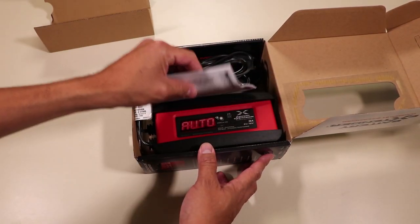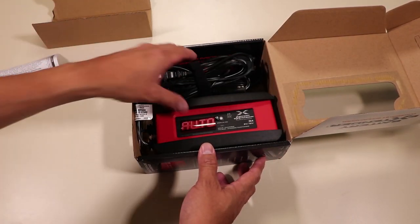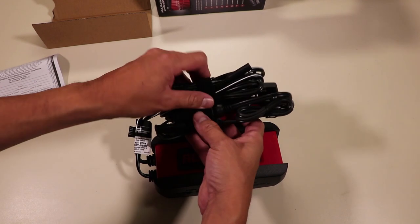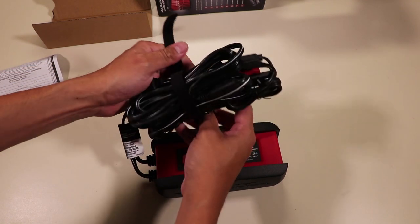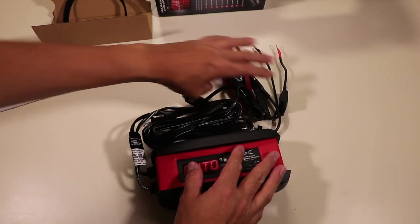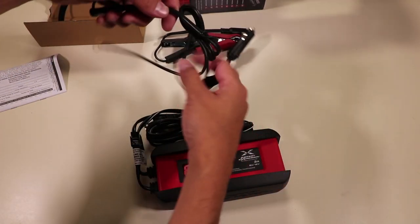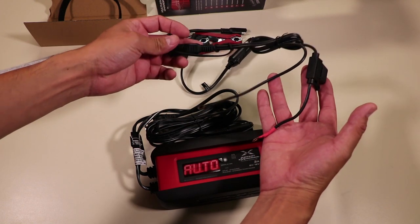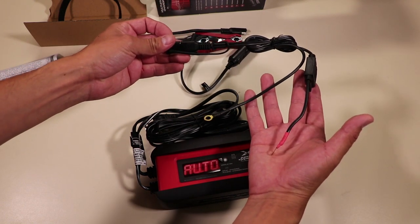Inside of the box you have obviously your warranty, you have the actual battery maintainer and you got a couple cords on here. Let's unravel this one and see what that looks like. So you get this guy right here. This goes to the battery if you decide to hardwire the battery maintainer to the battery.